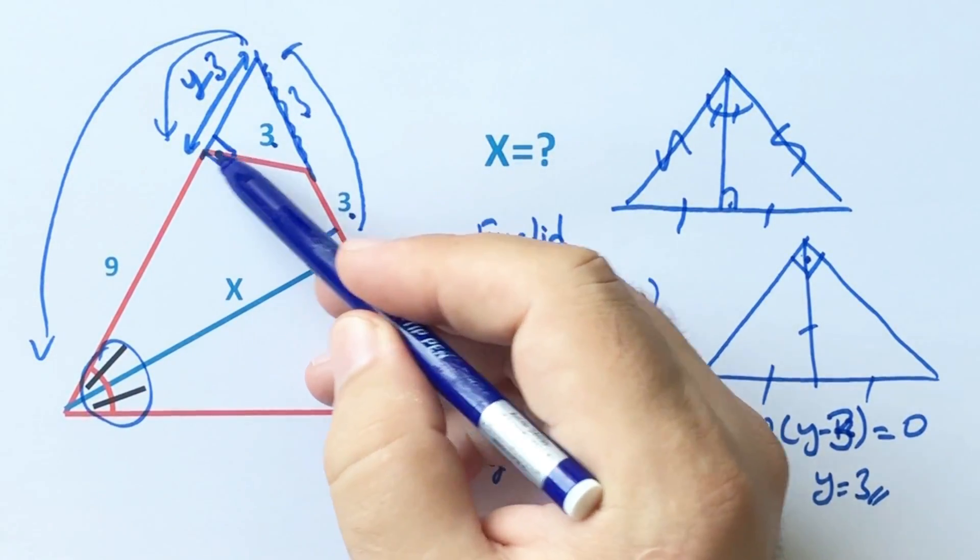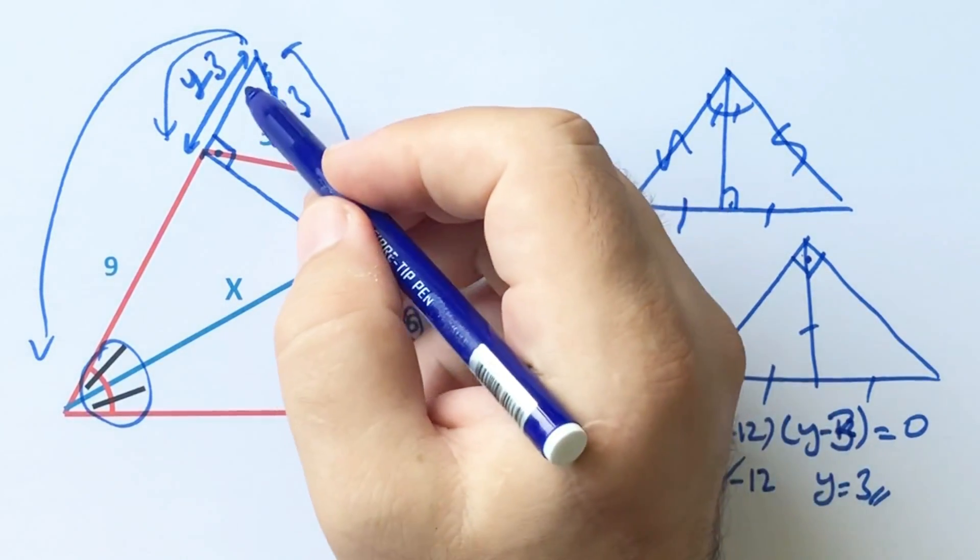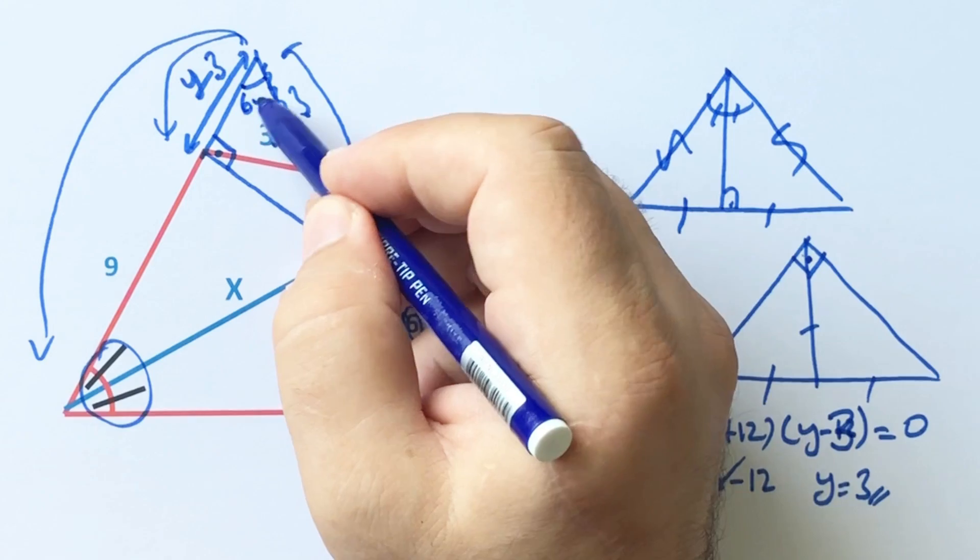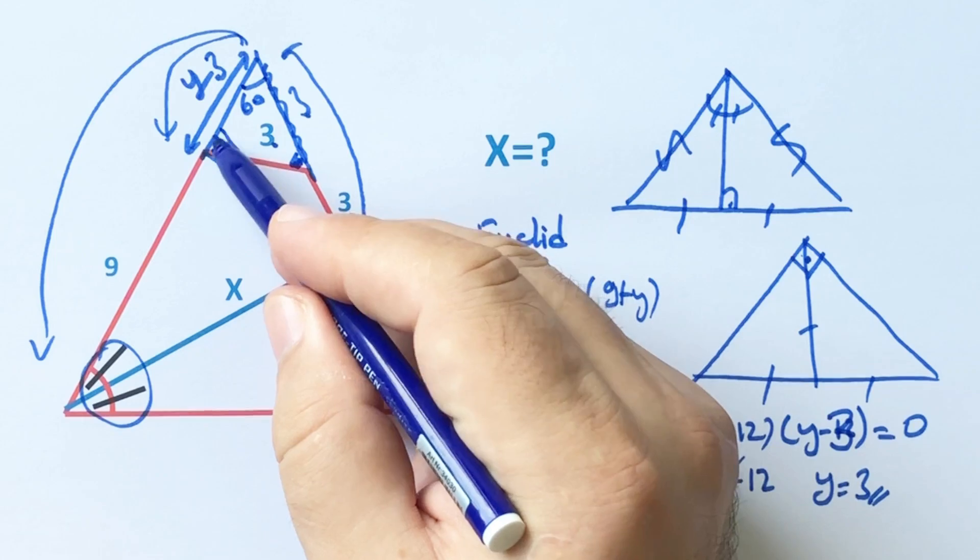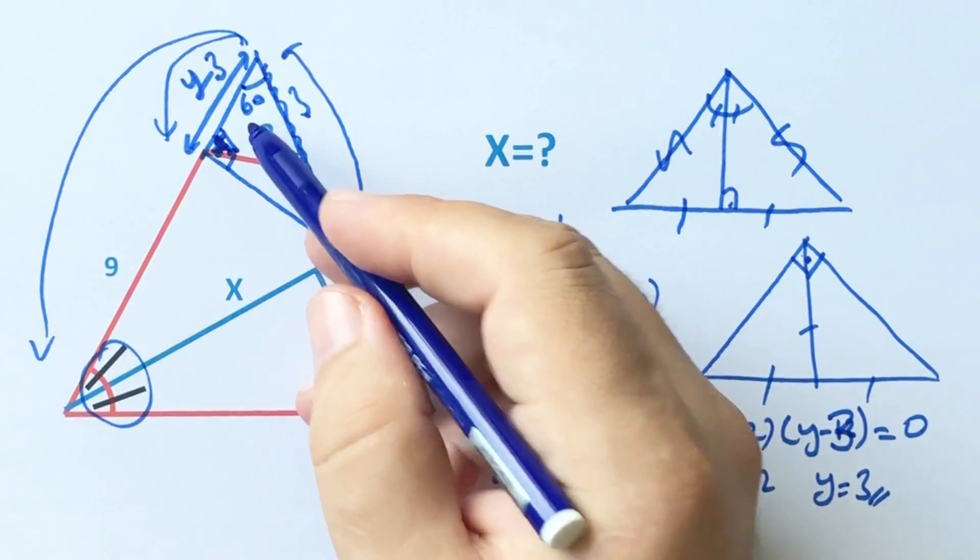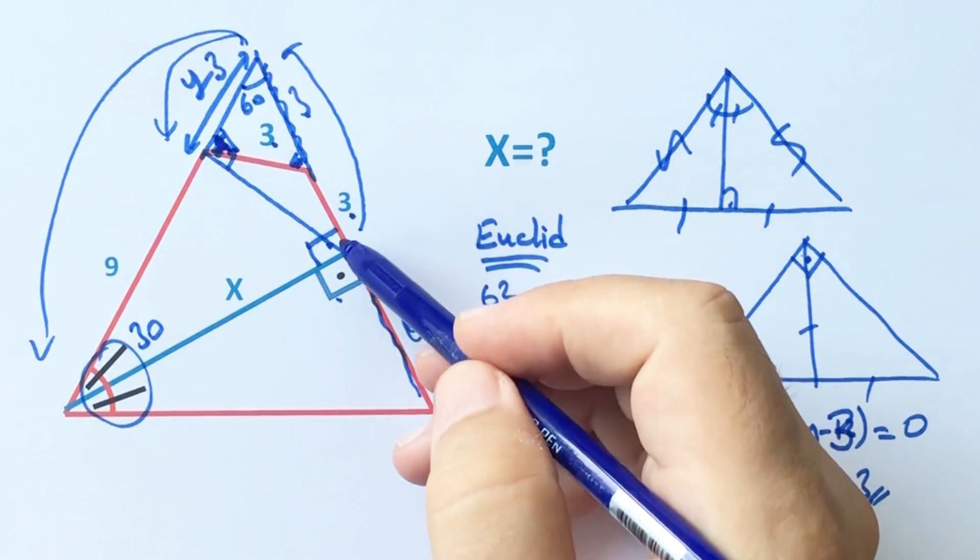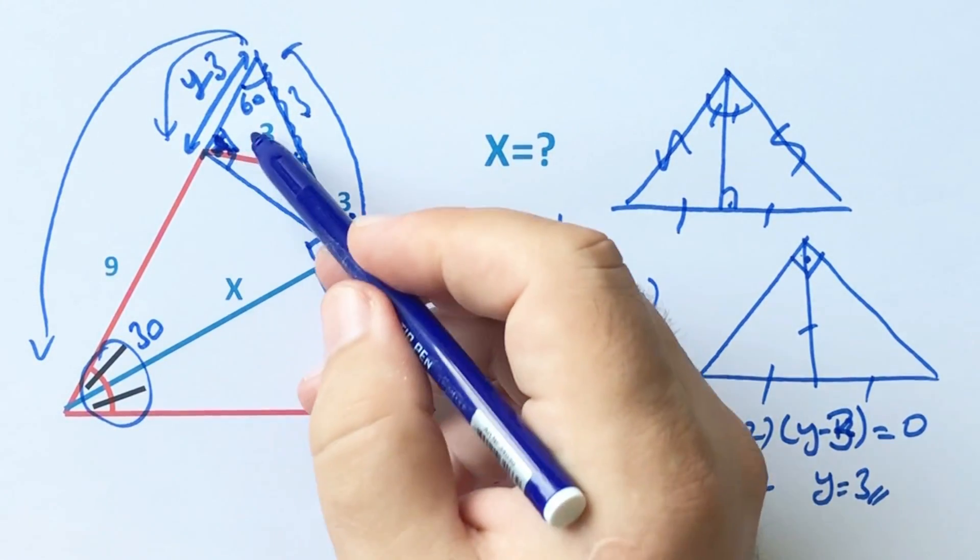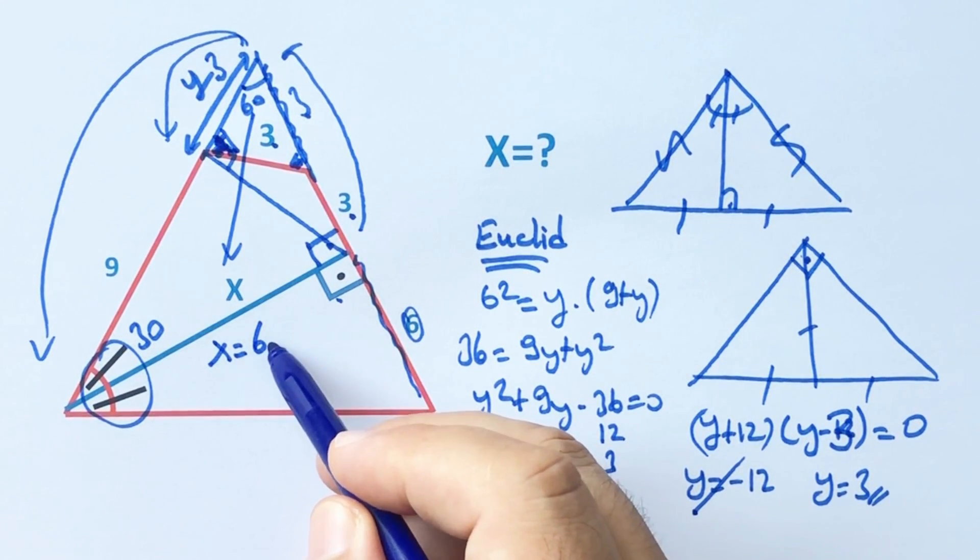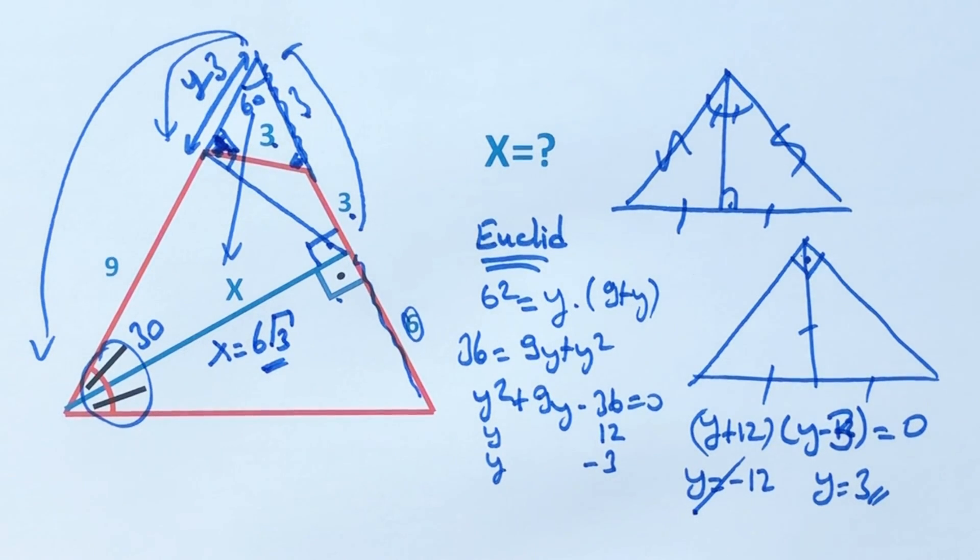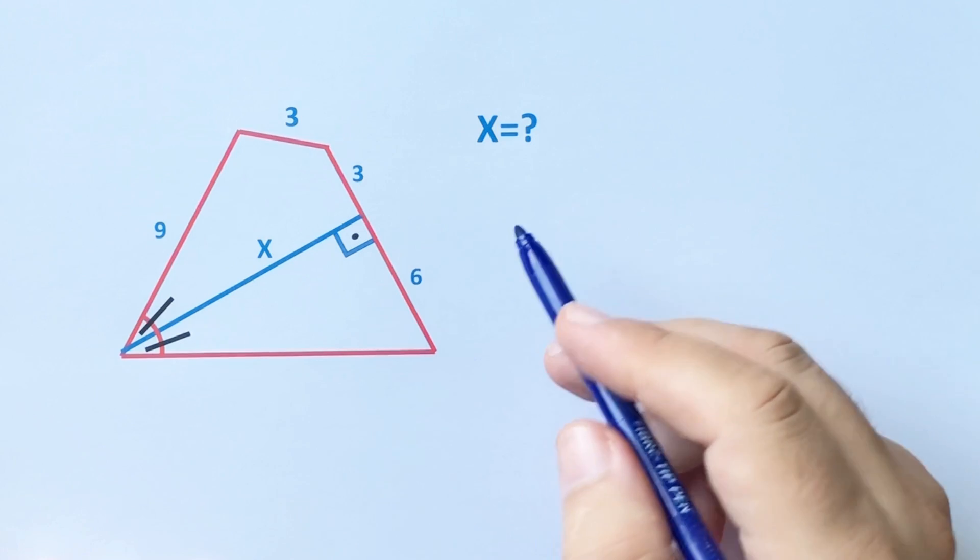If here is 3, this triangle is an equilateral triangle. This angle must be 30 degrees. Opposite of the 30 degrees is 6, that means x equals 6 root 3 units. This was the first method.